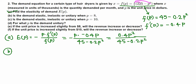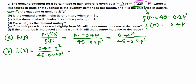In part B, we need to determine if demand is elastic, inelastic, or unitary when p equals 8. Plug p = 8 into the formula: E(8) = 0.4 times 8 squared, all over 45 minus 0.2 times 8 squared. Using a calculator, this is about 0.79, which is less than 1, so the demand is inelastic.